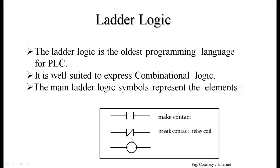The next symbol is a break contact — also called a normally closed (NC) switch. It is normally closed: when there is no input to this switch, it gives continuous output. Once some input is given to this switch, it opens and the output is cut off. So NO and NC are two input symbols, and the third symbol is used for an output which works according to the logic. These three are the main symbols used in ladder logic.